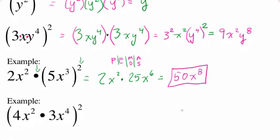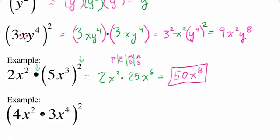In our next example, we have a product but the product is being squared. Remember our order of operations — here is a multiplication and here is an exponent. You might say to do the exponent first, but there's a gotcha: we actually have parentheses. According to the order of operations, parentheses comes before everything else, so the parentheses says to do the multiplication first.